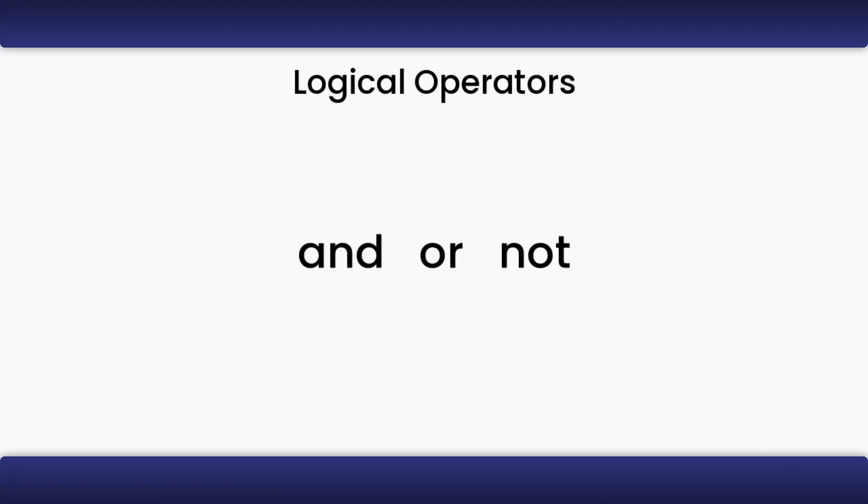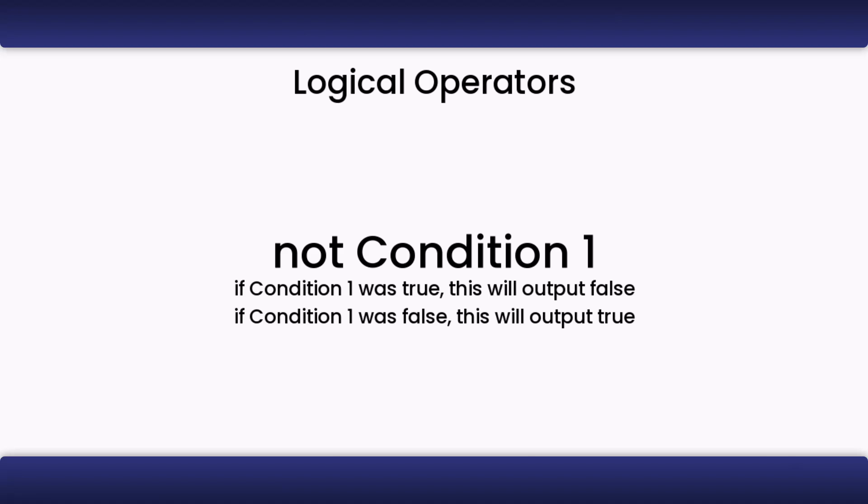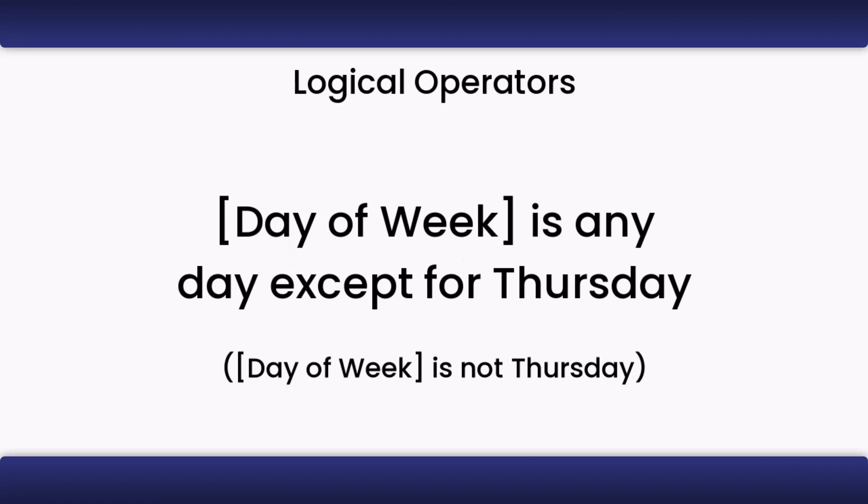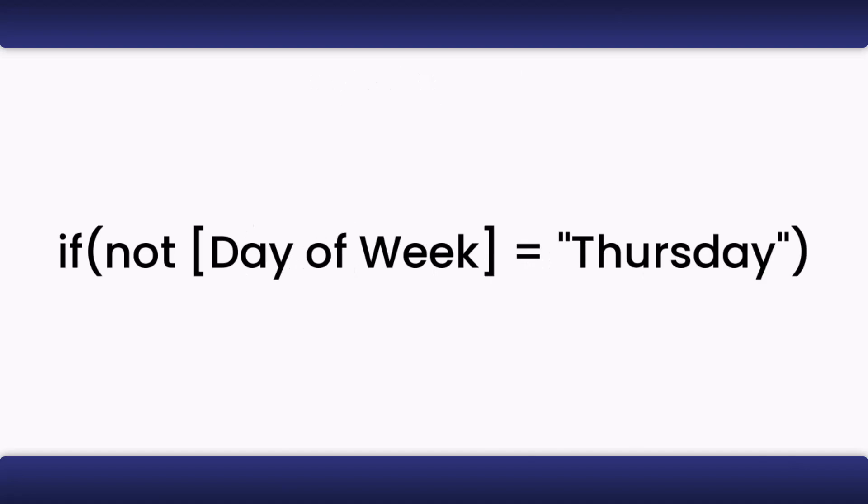Lastly, we have NOT. NOT will flip the truth value of the condition it is in front of. For example, if we wanted to check DAY OF WEEK was ANY DAY except for THURSDAY, you could write NOT DAY OF WEEK equals THURSDAY.